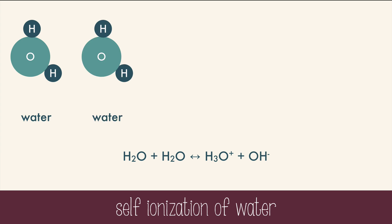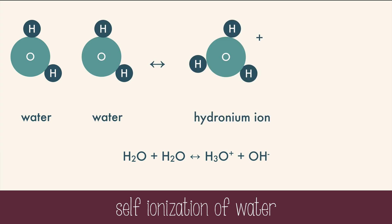When water interacts with other water, it will self-ionize, meaning one molecule will break apart, giving a hydronium ion and a hydroxide ion. This occurs only to a very, very small extent. It would be more accurate to draw the double arrow so that the forward reaction was much smaller than the reverse.